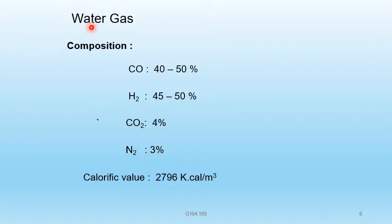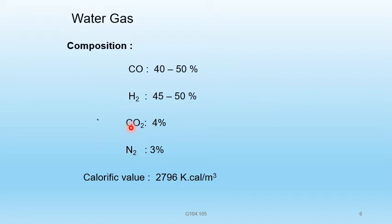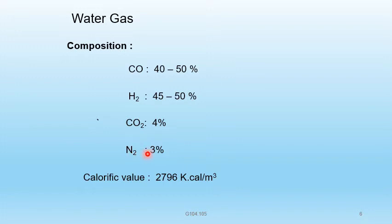Water gas is a mixture of mainly carbon monoxide and hydrogen, with a little amount of carbon dioxide and nitrogen. Average composition: carbon monoxide 40 to 50%, hydrogen 45 to 50%, carbon dioxide 4%, nitrogen 3%.